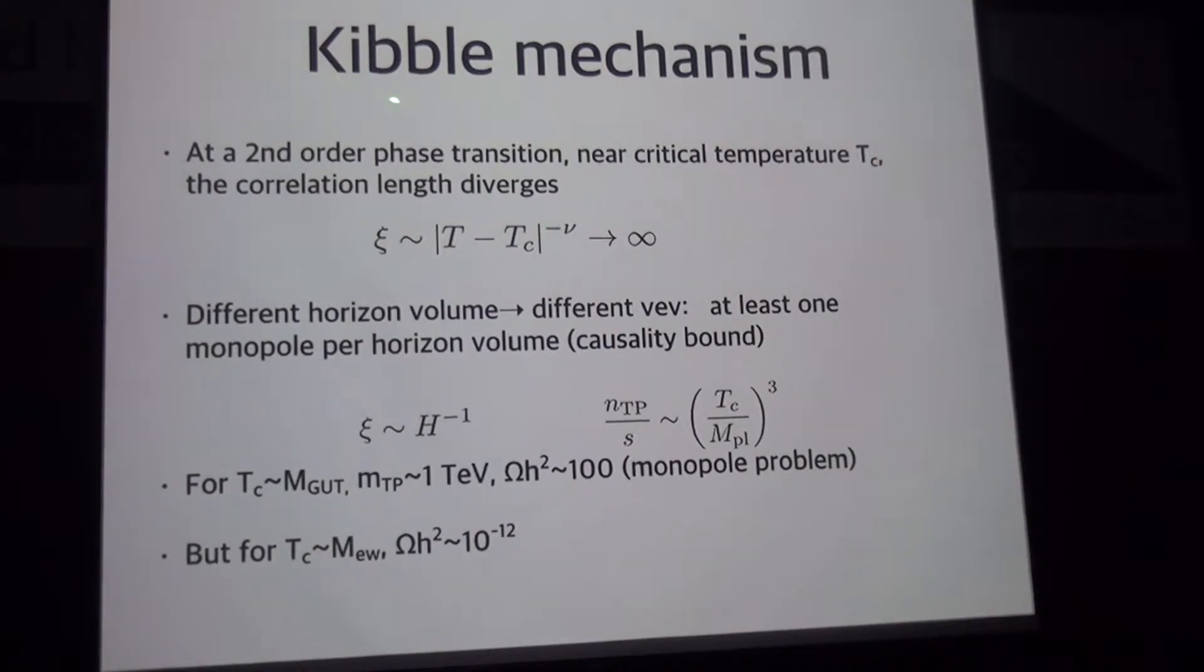Since the relic abundance of monopole is not the usual freeze-out mechanism, let me briefly explain the mechanism to estimate the relic abundance of monopole dark matter. The first one is Kibble mechanism. We assume the phase transition is second order. Then near the critical temperature, the correlation length diverges. So it becomes infinity and we expect one monopole in the entire universe. However, in practice, due to causality, we expect different horizon volume will have different vevs. So they are not correlated with each other. So we expect at least one monopole per horizon volume. So the correlation length is given by the Kibble constant, inverse of Kibble constant. So this gives the lower bound on the number density of monopole, which is given by this value.